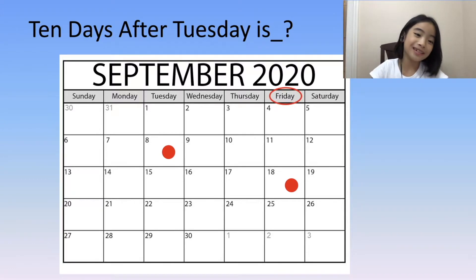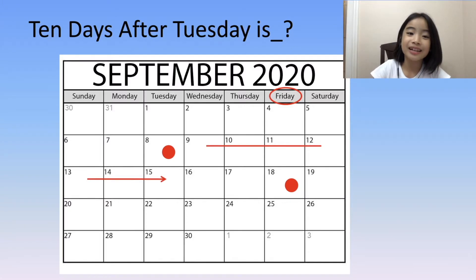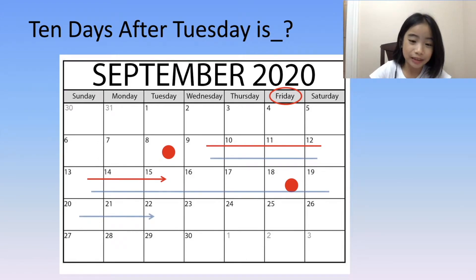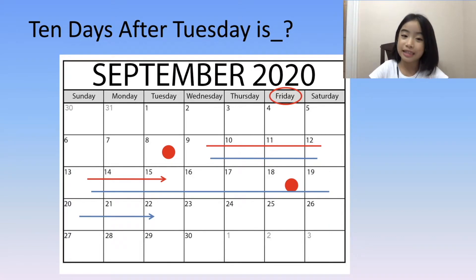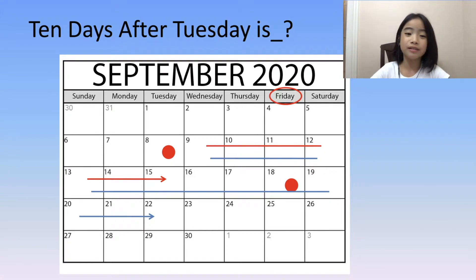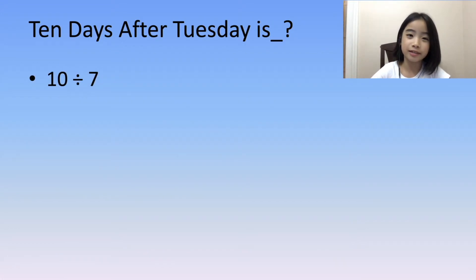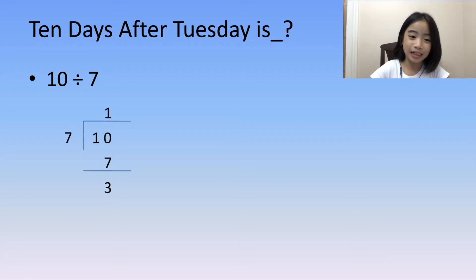I don't know if you have noticed, but 7 days after Tuesday is still Tuesday. If you agree with me, we'll use another method to solve this question — we'll use division. 10 divided by 7. Here is my long division, and the answer is 1 remainder 3.